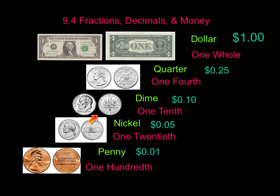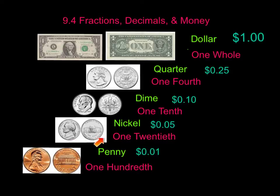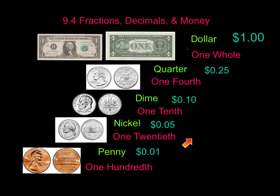We have our dime, front and back. A dime is worth 10 cents and is one-tenth. We also have our nickels. A nickel is worth five cents, or one-twentieth, or five one-hundredths of a dollar.